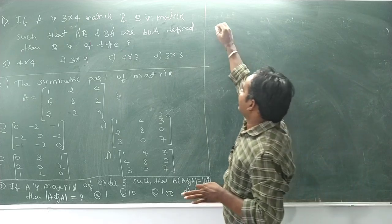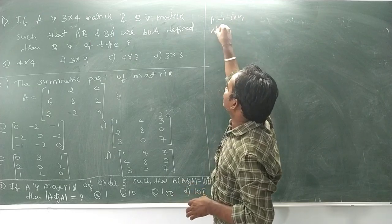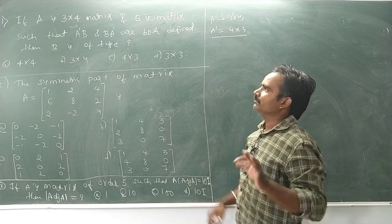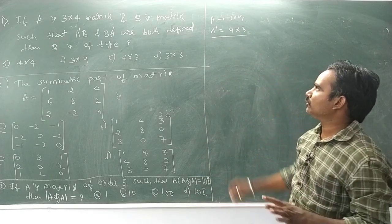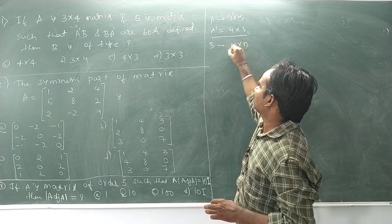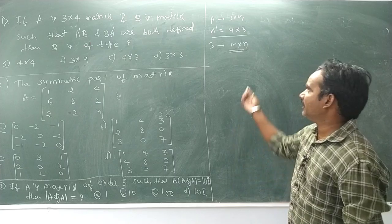We know that A is 3 by 4, so A transpose is 4 by 3. Now for A'B, suppose B is an M by N matrix.